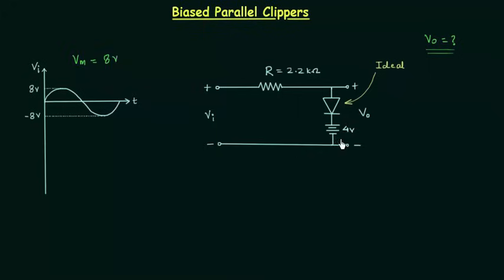I am calling this circuit a biased clipper because we have an additional DC voltage source present in this circuit. The magnitude of that DC source is equal to 4 volts.